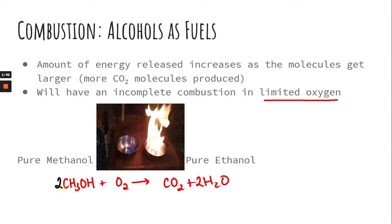One trick is to make the alcohol coefficient an even number. If we put a 2 in front of methanol, we then need to balance the carbons, and that also gives us eight hydrogens, so we put a 4 in front of H2O. Four plus four is eight oxygens on the product side. We already have two from the methanol, so we just need six more from O2.